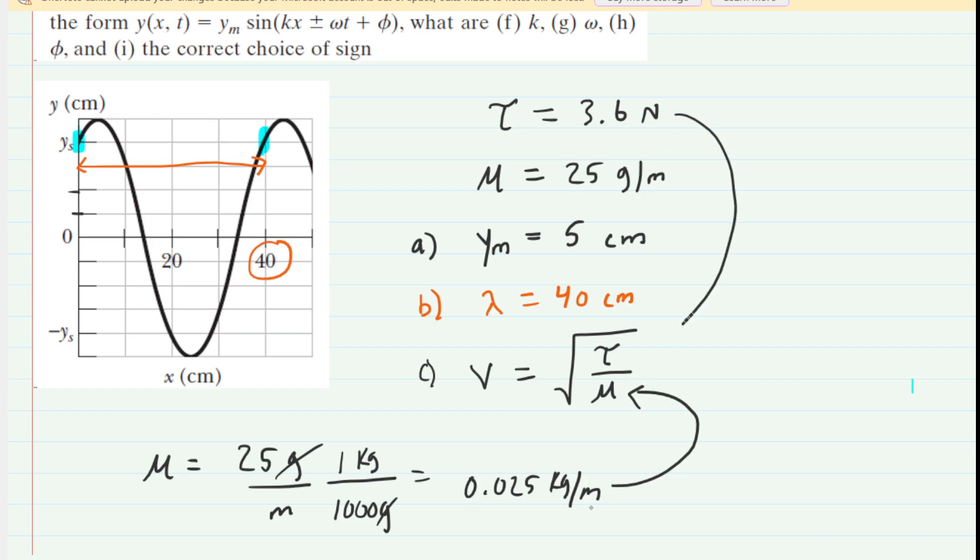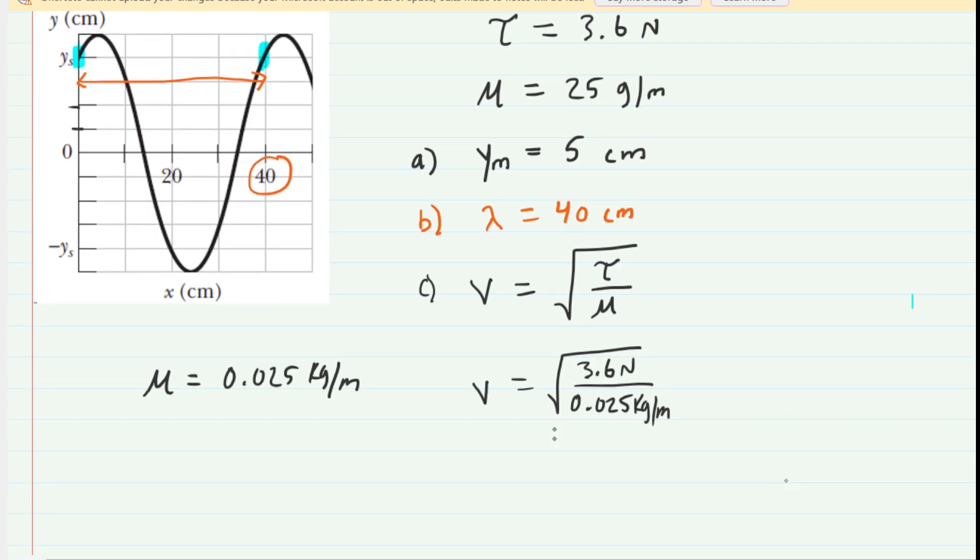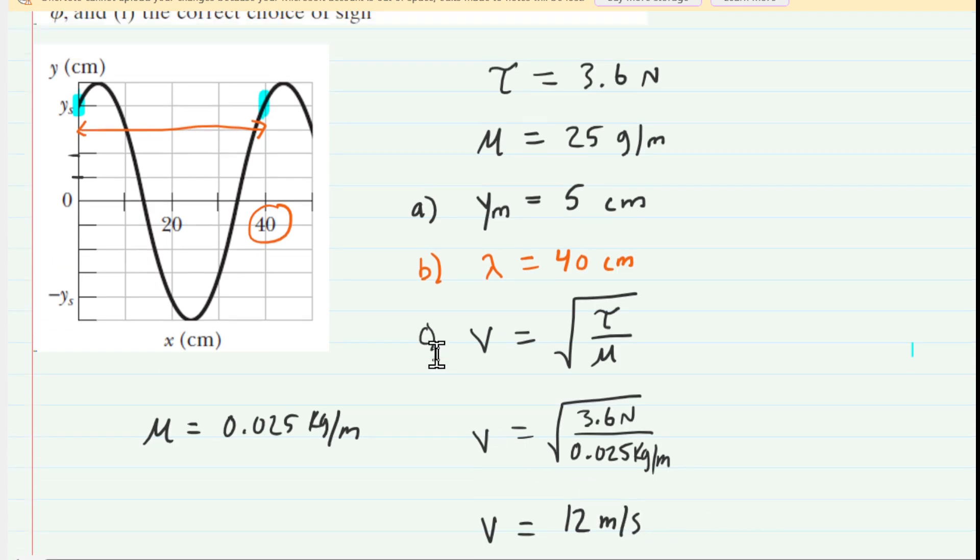And after plugging in and simplifying, we get a wave speed exactly 12, and the standard unit of speed, of course, is meters per second. So that's the correct answer to part C.